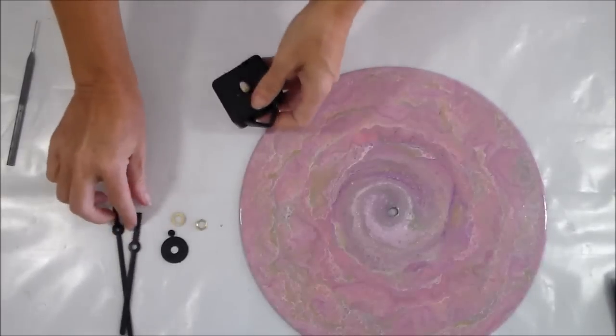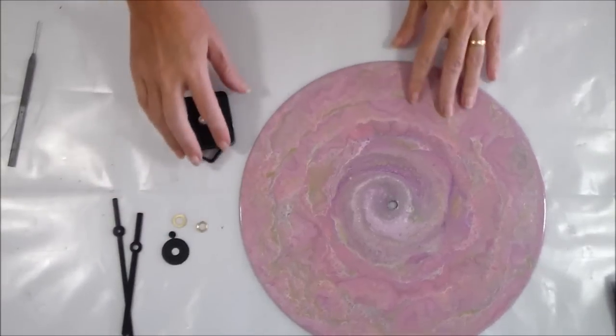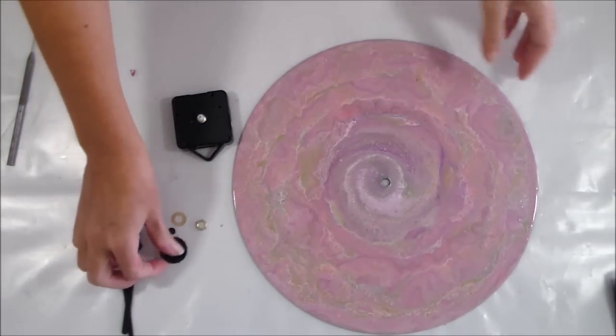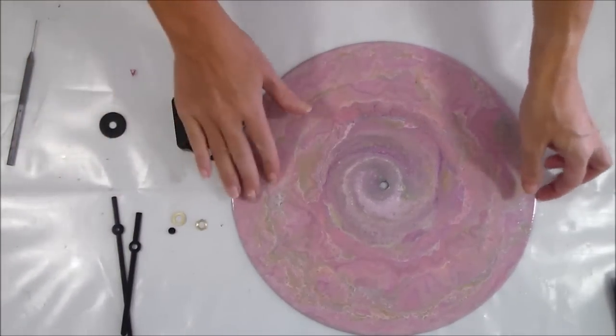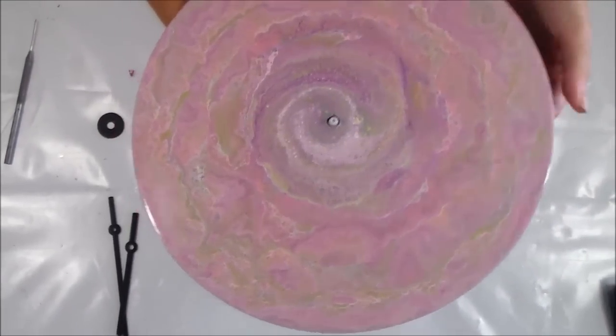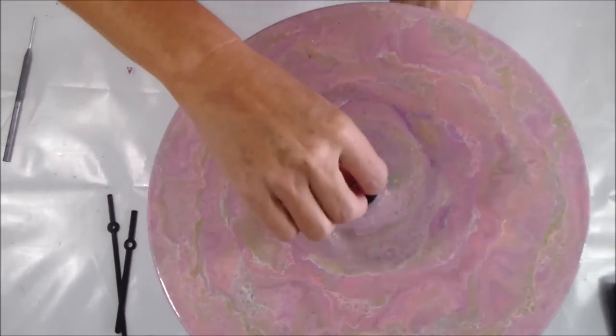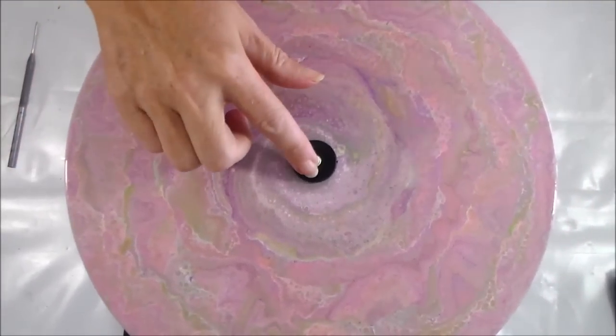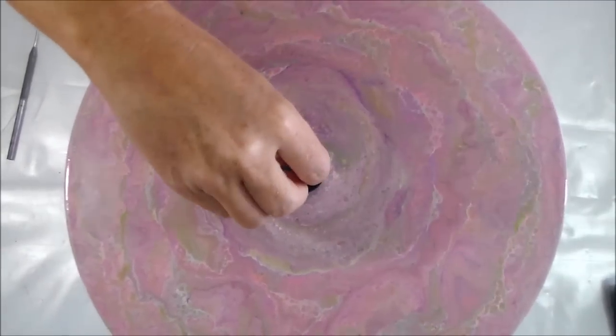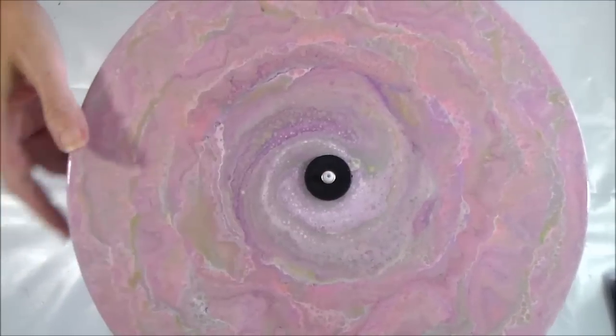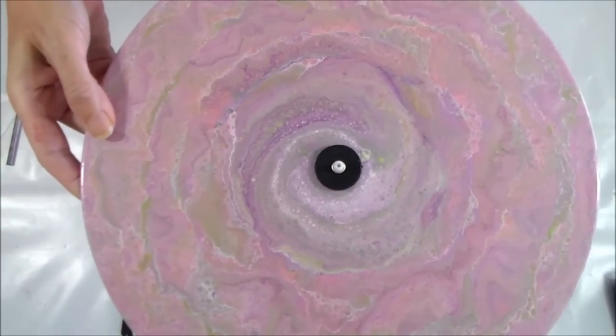So now in terms of all these little bits and pieces, you have a design choice to make because you can put this black washer on the front or the back. So if you put it on the front, obviously what you'll end up with is a black circle in the centre of your record and you may or may not want that. If you don't, you can always fit it on the back too.